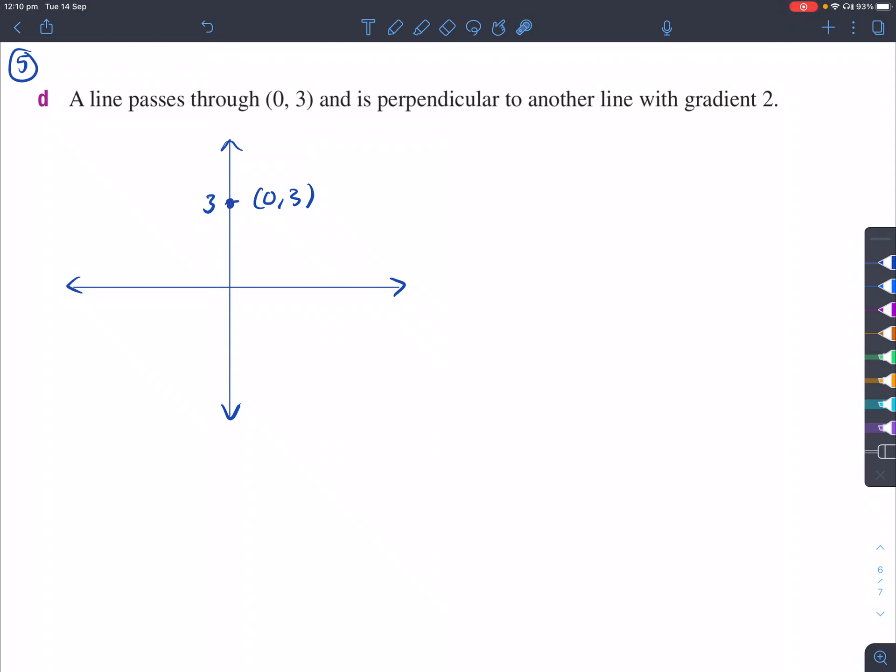But it's perpendicular to another line of gradient 2. A gradient of 2 just means it's a line that is sloping upwards because it's positive. So imagine if you had another line like this. Let's just say I drew another line like that. That is a gradient of 2.